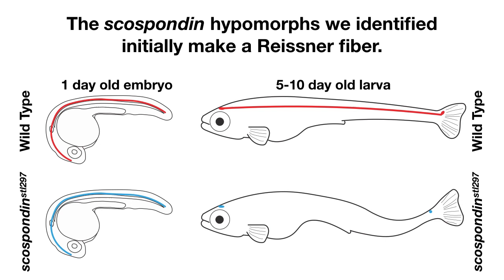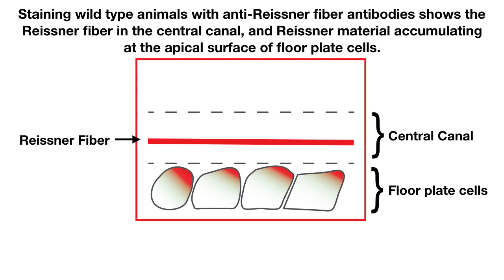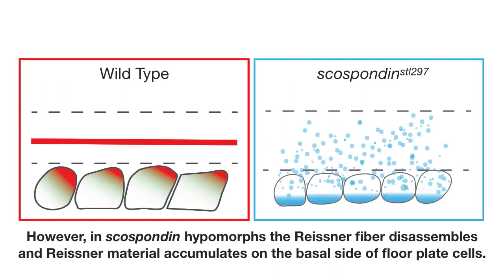In contrast, the scospondin hypomorphs we identified initially make a Reissner fiber and develop normally for the first few days, but between 5 and 10 days the fiber disassembles and curves appear. Staining wild type animals with anti-Reissner fiber antibodies shows the Reissner fiber in the central canal and Reissner material accumulating at the apical surface of floor plate cells. However, in scospondin hypomorphs, the Reissner fiber disassembles and Reissner material accumulates at the basal side of floor plate cells.